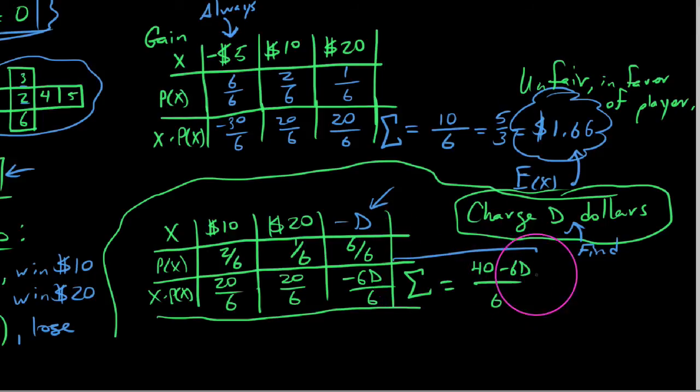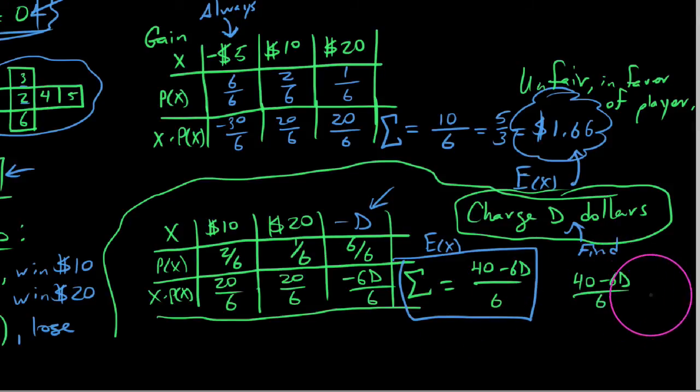So the first thing I want to point out is this is the expected value. This is our E(X). But the question was what should we charge to make this game fair? And remember, fair means you neither won nor lost on average. So if we want this to be fair, what we're saying is we want (40 - 6D)/6 to come out to be an average of 0. And if that's the case, what we can do is actually just find this D. We'll do some algebra. For instance, we could take both sides of this equation times 6. Essentially, these cancel out. And we get this left on the left side: 40 minus 6D. And on the right, we still have 0.